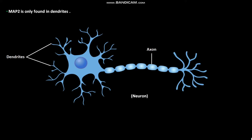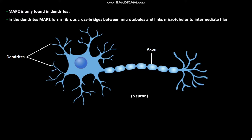MAP2 is only found in dendrites. In the dendrites, MAP2 forms fibrous cross bridges between microtubules and links microtubules to the intermediate filaments. Tau is present in both axons and dendrites.